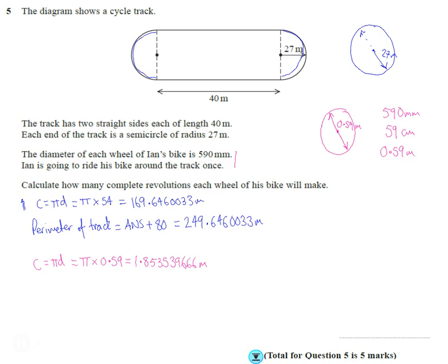So what I need to do now is I need to work out how many times this goes into this. So for the number of revolutions, I need to do the 249.64, and I'm writing the whole thing out. I can use the answer button in a sec on my calculator. Divided by the answer just had, the 1.85353966.